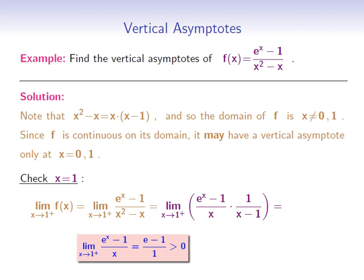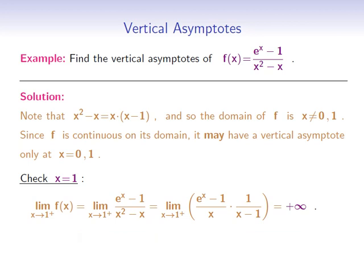We can rewrite the function and get the limit as x goes to 1 from the right of e to the x minus 1 divided by x, multiplied by 1 divided by x minus 1. The limit of e to the x minus 1 over x as x goes to 1 will be equal to e minus 1 over 1, which is a positive number. The limit of 1 over x minus 1 as x approaches 1 from the right will be equal to positive infinity. Therefore the whole limit is equal to positive infinity, and we conclude that x equals 1 is a vertical asymptote of f.